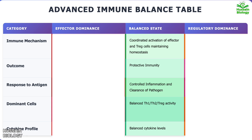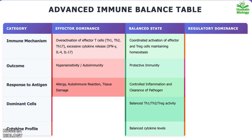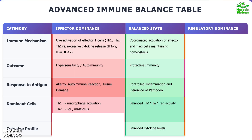When we move towards effector dominance, effector T-cells like Th1, Th2, and Th17 become overactivated, releasing excessive cytokines. The immune system starts reacting strongly, leading to allergies, tissue damage, or autoimmune diseases. The dominant cells include Th1 which activates macrophages, Th2 which drives IgE and mast cell response, and Th17 which promotes neutrophilic inflammation. Overall, the cytokine profile is highly elevated, resulting in acute inflammation or even tissue necrosis.